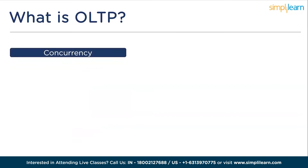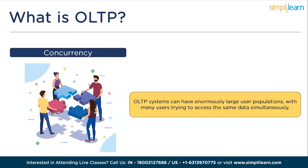The next characteristic is concurrency. OLTP systems can have enormously large user populations with many users trying to access the same data simultaneously. The system must ensure that all users trying to read or write into the system can do so concurrently. Concurrency controls guarantee that two users accessing the same data simultaneously will not conflict, or that one user has to wait until the other has finished processing before changing that piece of data.